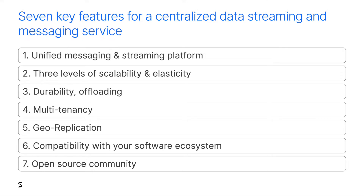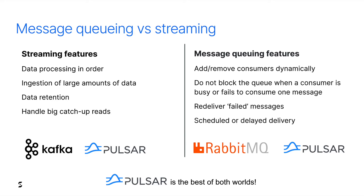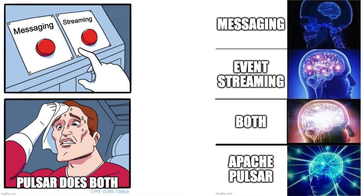Pulsar is a unified messaging and streaming platform. Data streaming and messaging require a different set of features, and Pulsar has all of these features. It can process large data streams like Kafka, but Pulsar also provides message broker features like RabbitMQ. So we can say that Pulsar is the best of both worlds. With Pulsar, you don't have to choose between messaging and streaming — you can do both using the same platform, the same technology.